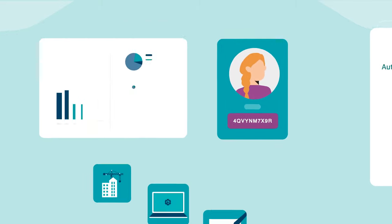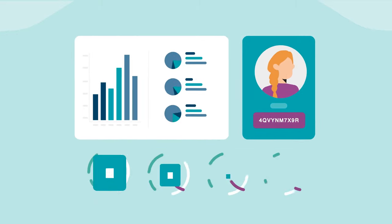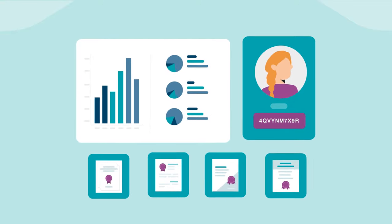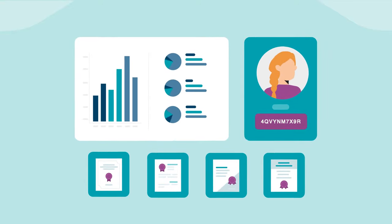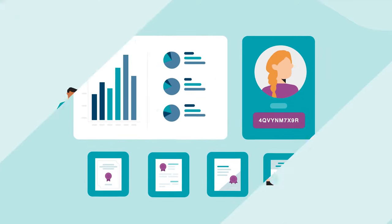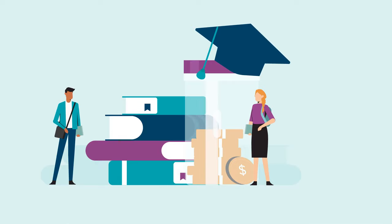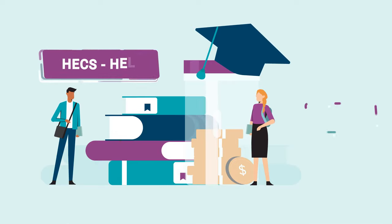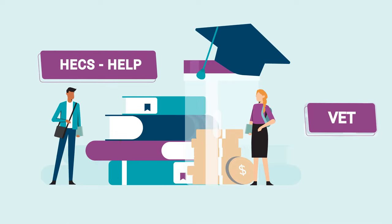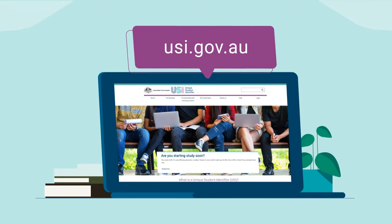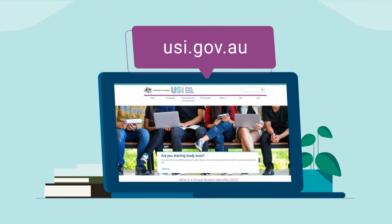Having a USI is the key to receiving your Statement of Attainment, Qualification or Award and making sure you are eligible for Commonwealth Financial Assistance like HECS HELP or VET Student Loans. For more information go to www.usi.gov.au.